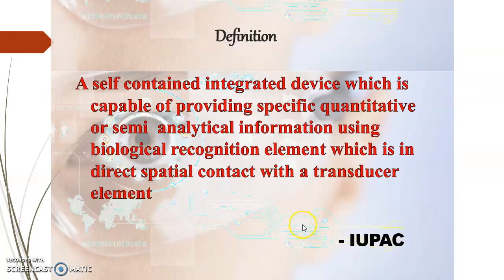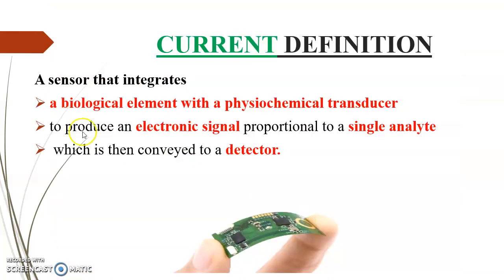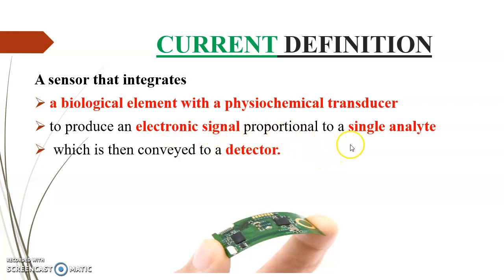This is the definition given by BASI. Currently, we can also define a biosensor as a sensor that integrates a biological element with a physico-chemical transducer to produce an electronic signal proportional to a single analyte, which is then conveyed to a detector.